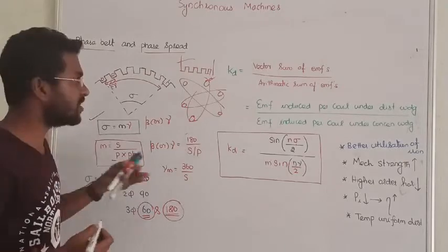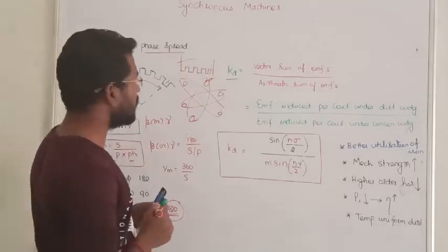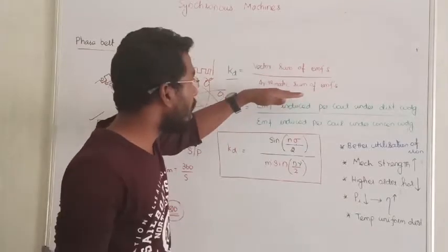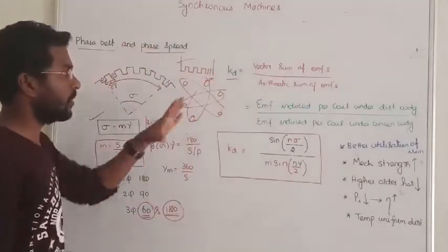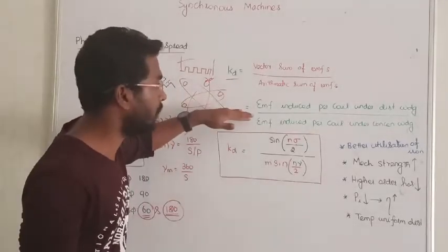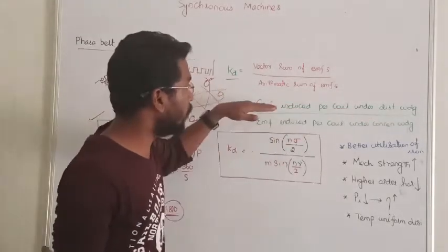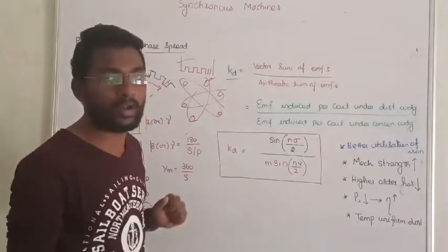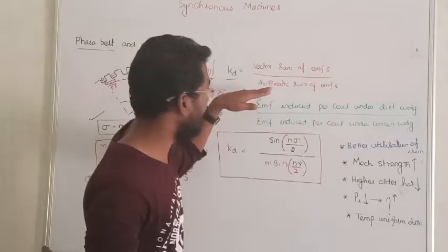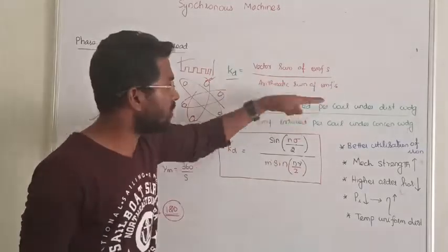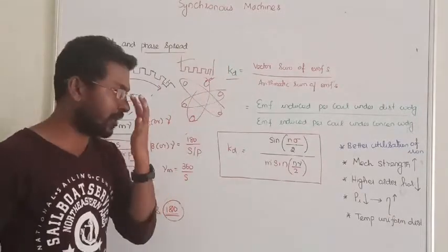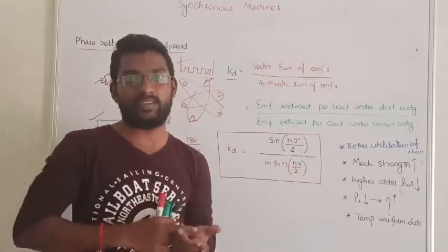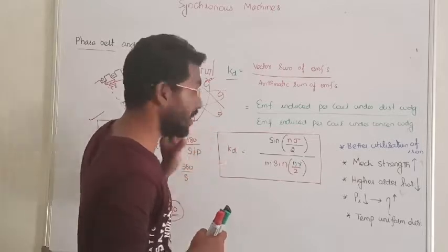Now we are going to discuss about distribution factor. Distribution factor is defined as the ratio of the vector sum of induced EMF divided by the arithmetic sum of induced EMF. In concentrated winding the arithmetic sum is used as the scalar value. In distributed winding, the vector sum is used. The ratio gives the distribution factor. For derivation, you can refer to J.P. Gupta's Electrical Machines.